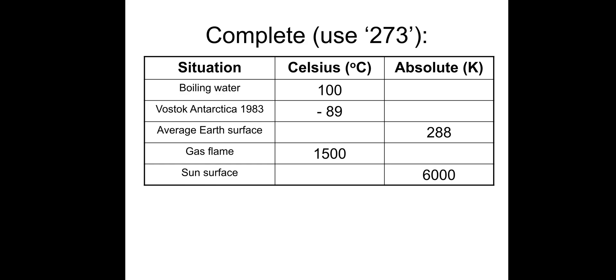I'll take you through the answers. Boiling water: if that's 100 degrees Celsius, that would be 373 Kelvin. Vostok, Antarctica 1983, I believe is the coldest temperature ever recorded in nature, would be 184 Kelvin. The average Earth surface temperature: 288 Kelvin or 15 degrees Celsius.